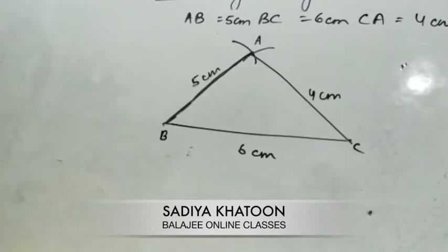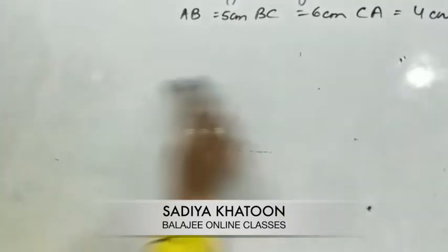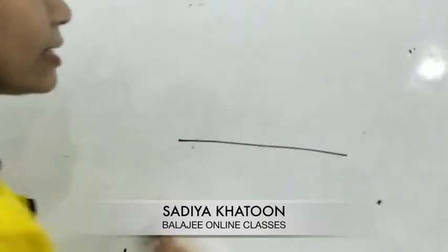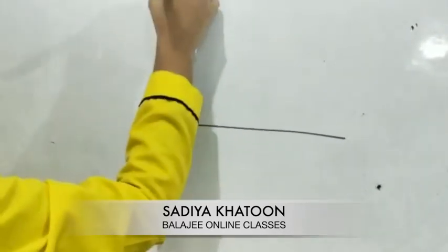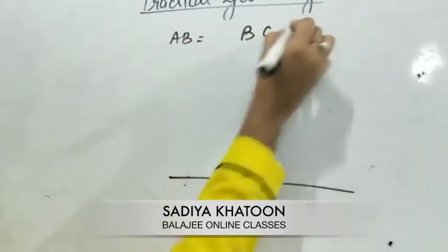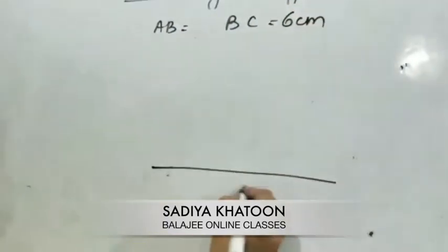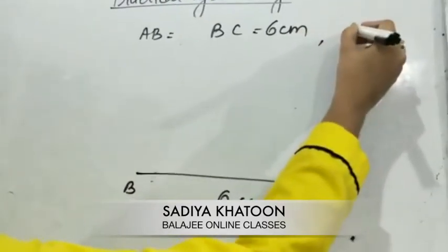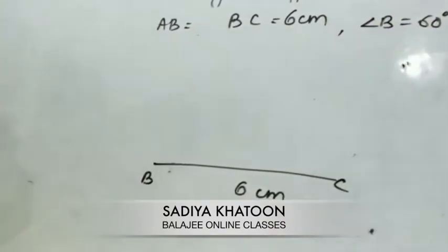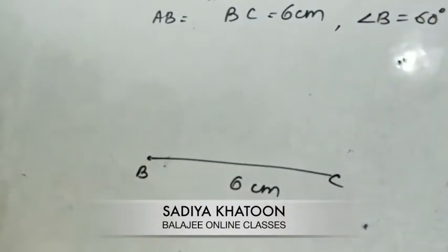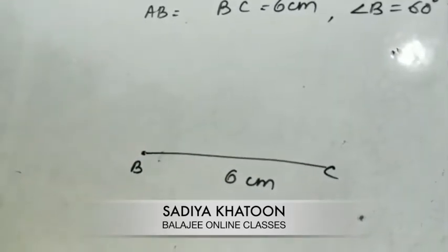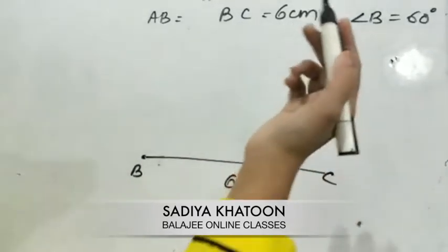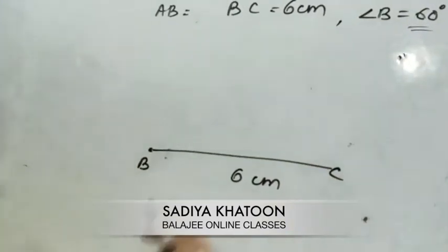Sometimes the question can come in which you are given an angle. For example, you are given sides AB and BC — say BC = 6 cm — and angle B = 60 degrees. You have to create a 60-degree angle at B using either a compass or a protractor, as you studied in class 6. You can use whichever tool is not restricted.